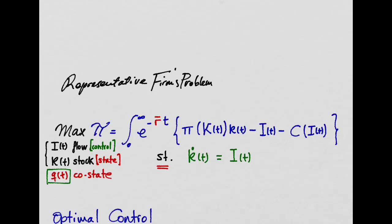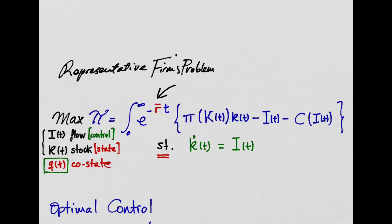Now, our firm wants to maximize its discounted profits, the sum of all of its profits at every period in time, given that the interest rate is fixed at some r bar. Here, the firm controls how much they invest, which is a flow variable, and they also have a state variable, which is the small k.